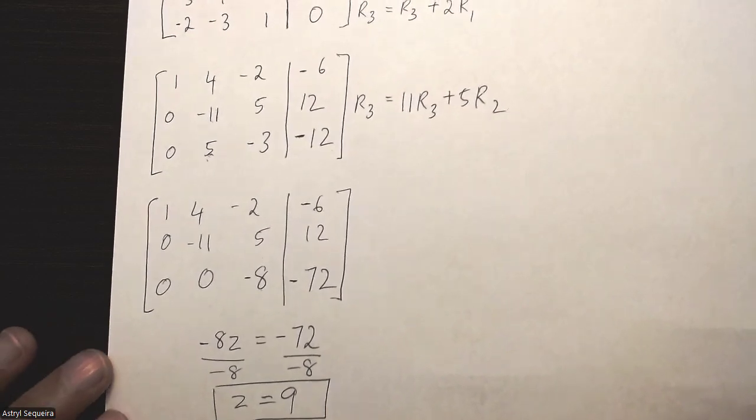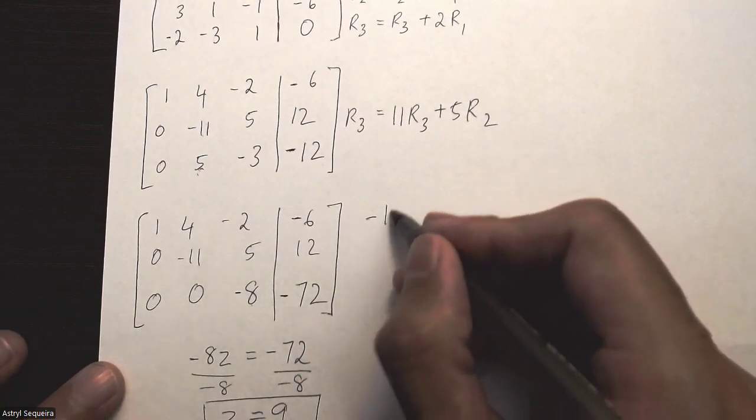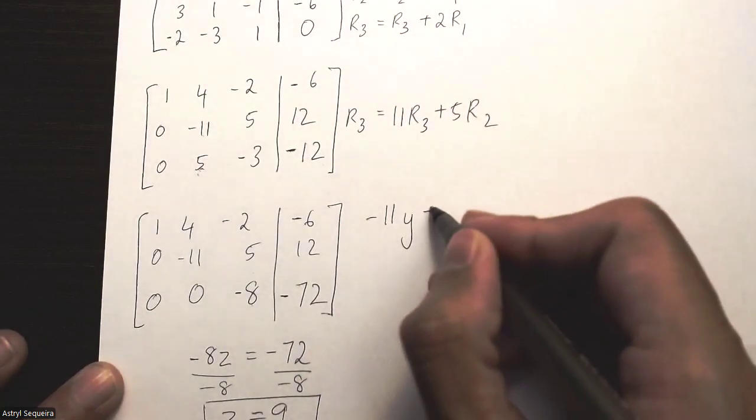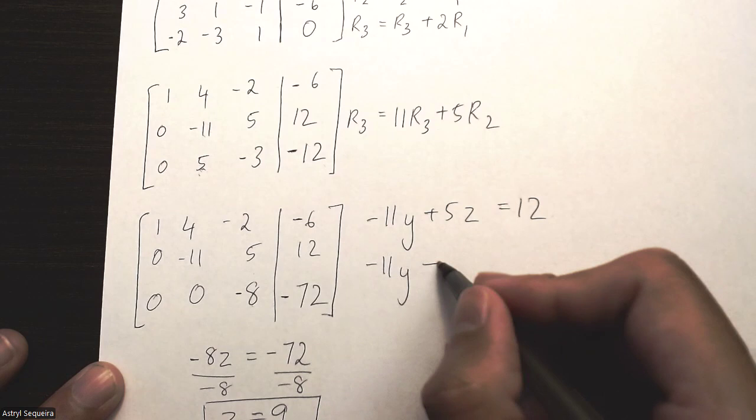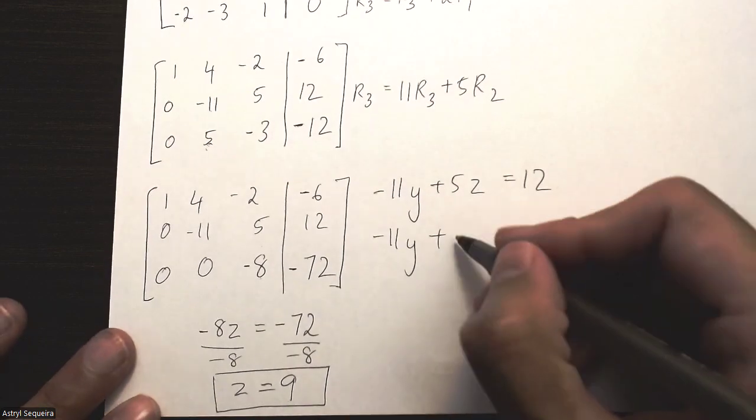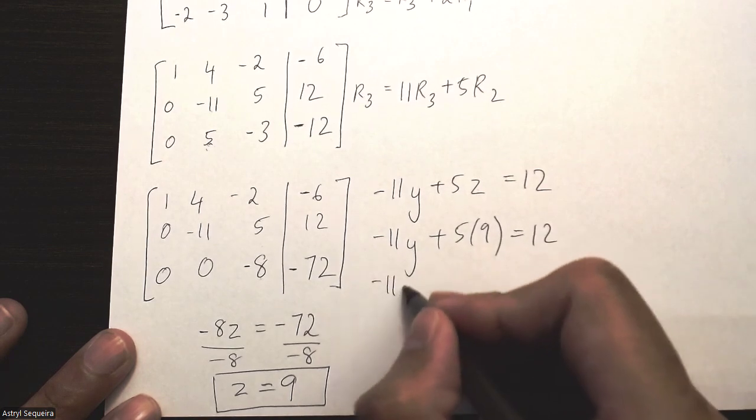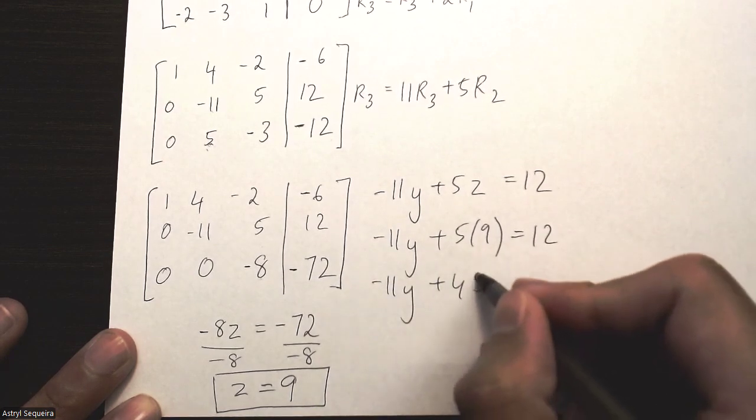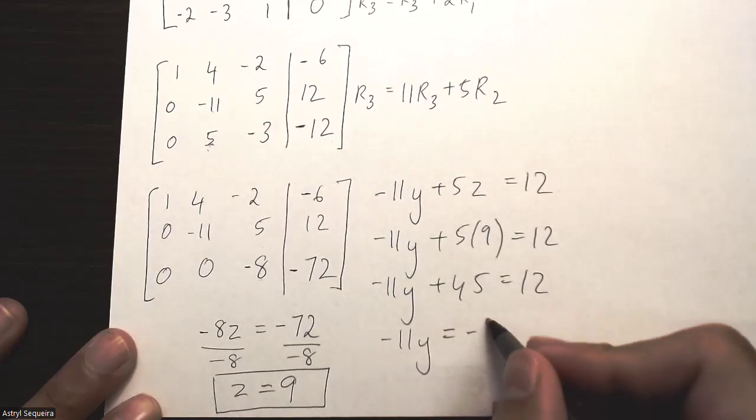I'll use the second equation here to find my y. So negative 11y plus 5z equals 12. Negative 11y plus, I know my z is 9, 5 times 9 equals 12. Negative 11y plus 45 equals 12. Negative 11y equals negative 33, which means y just equals 3.